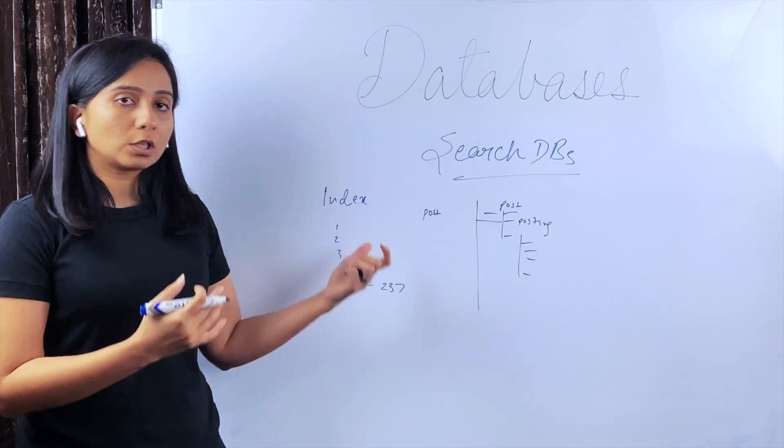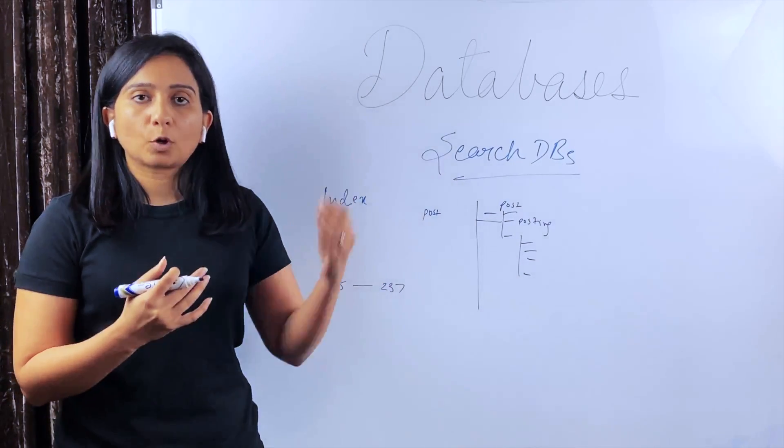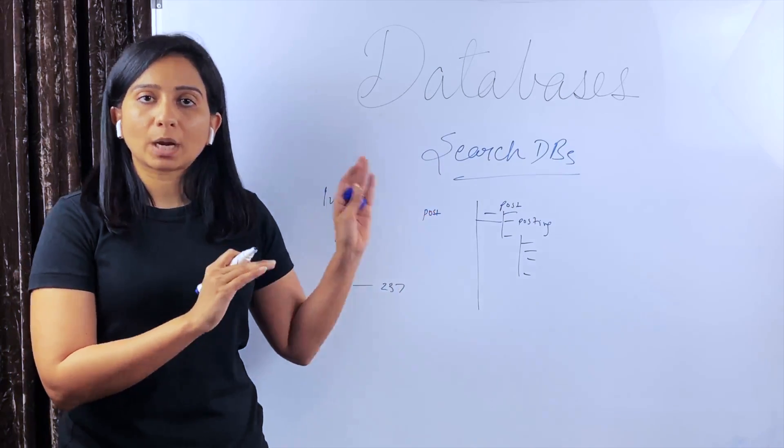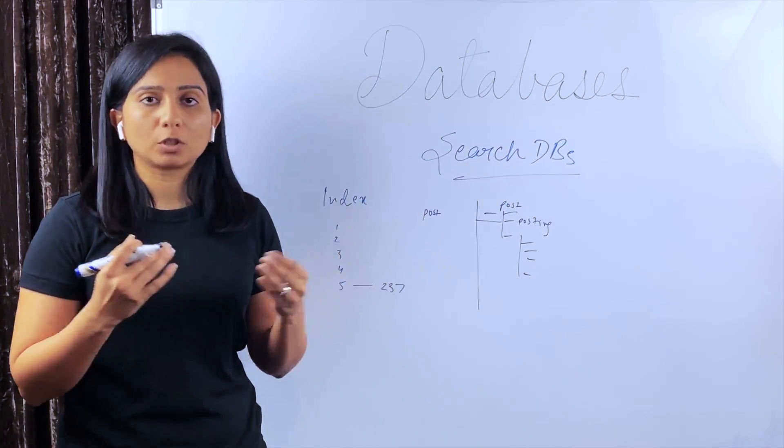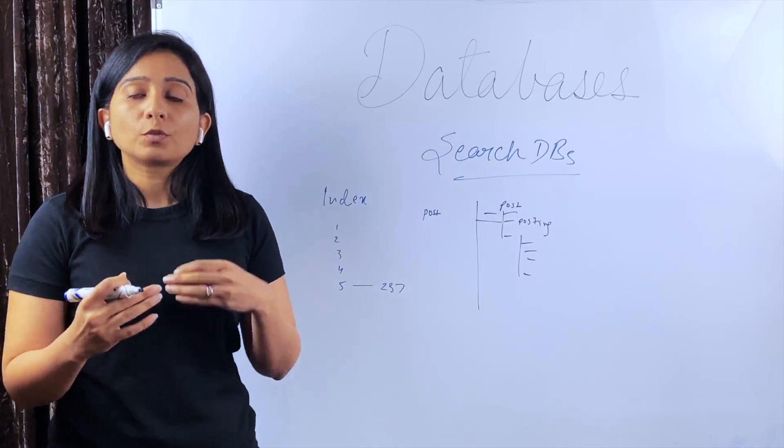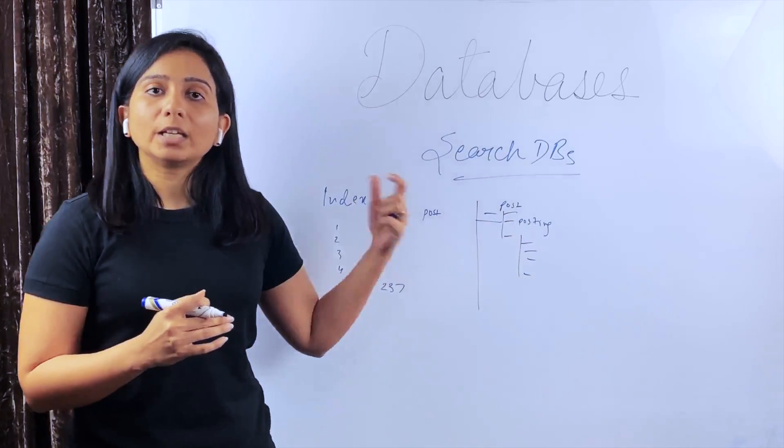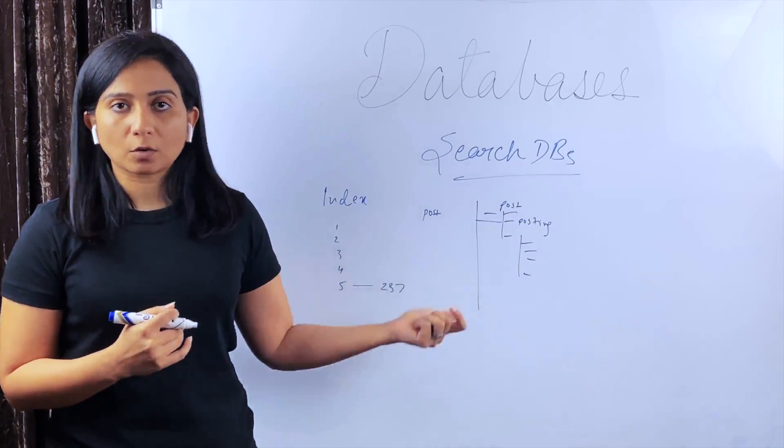The important thing to note here is the data that is stored in search databases, that is not the primary data store. So if you are working with an e-commerce application, the product catalog, all the products and items will be stored in a primary database, maybe a relational or a non-relational DB. And the results of search queries or the data on which frequent queries are executed, that will be stored on search DB, and it will be refreshed as per the frequency of the queries.